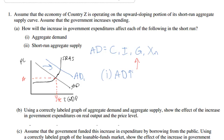We should probably assume this is only a one-point question. The reason is it asks how the increase in expenditures will affect aggregate demand — it does not say to explain how it affects aggregate demand. Therefore, a question like this would most likely be only one point, and I can earn that point simply by indicating that aggregate demand will increase. No more information is needed.